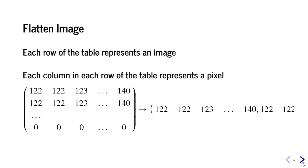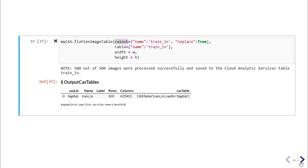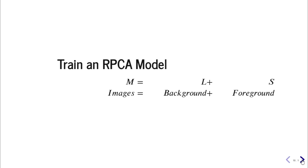We need to feed these images to the RPCA model as a table, where each row represents one image frame and the columns are the pixels in that frame. To do this we use the flattenImage action, providing the width and height of the images to convert them into that table format. We then feed the flattened table to the RPCA model.